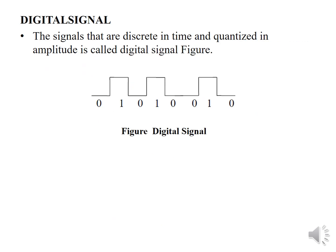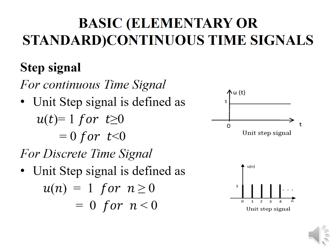Digital signal: a signal that is discrete in time and discrete in amplitude is said to be the digital signal, as shown in the figure. Now we can see some of the elementary or basic continuous time signals. For continuous time, the unit step signal is defined as u(t) = 1 for t ≥ 0 and 0 for t < 0. This is the diagram for the waveform of the unit step signal.